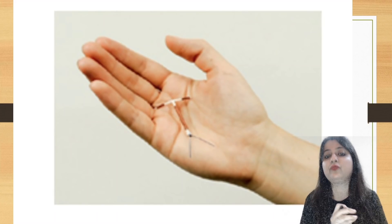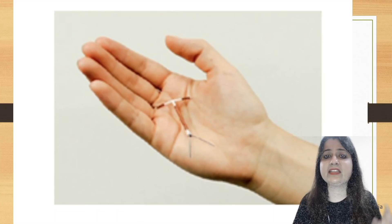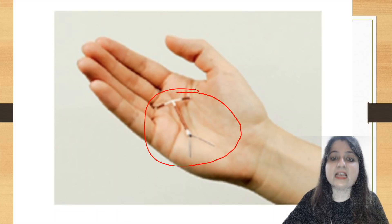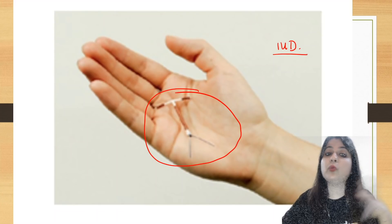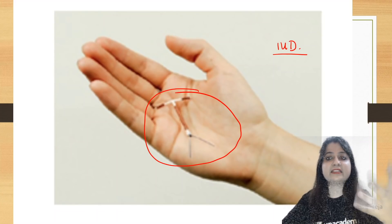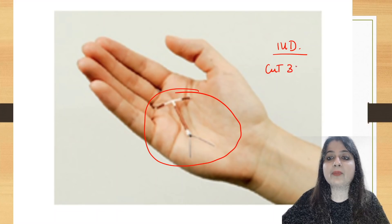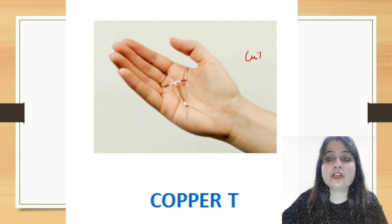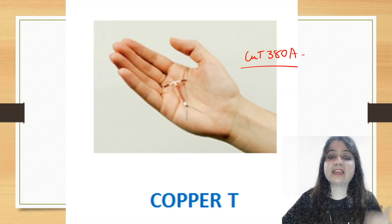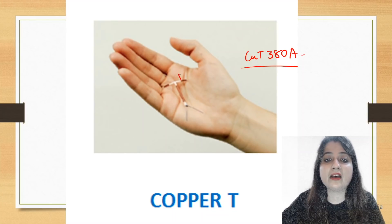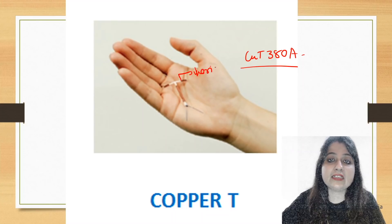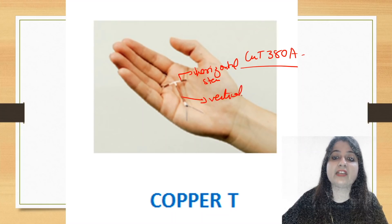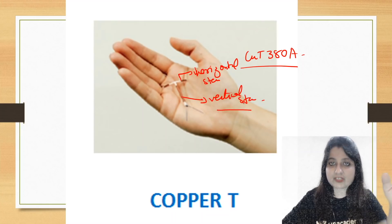Now look at this contraceptive. What is this? We are going to study the identification features of intrauterine devices. If you look at this, you can make out that this is an IUD, but which one is it? Is it Copper T380A? This is Copper T380A — a plain copper T. Why? Because it has copper wire wound on the horizontal stem as well as on the vertical stem. I will be showing you the distinguishing features as we proceed.